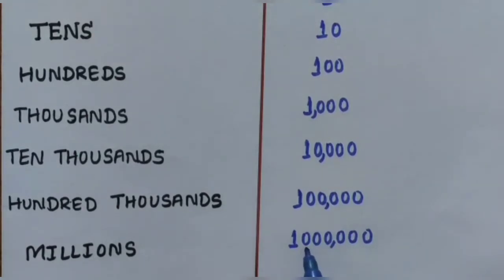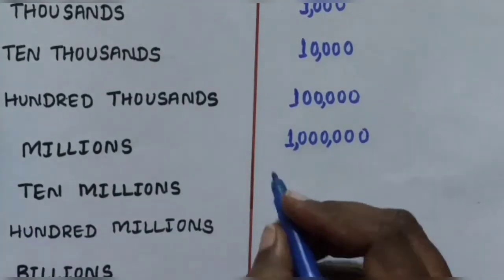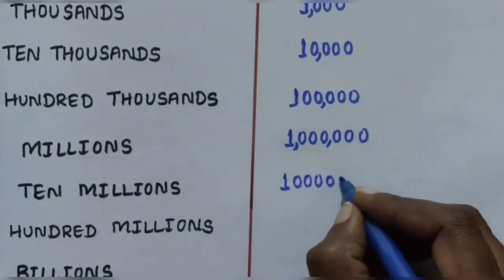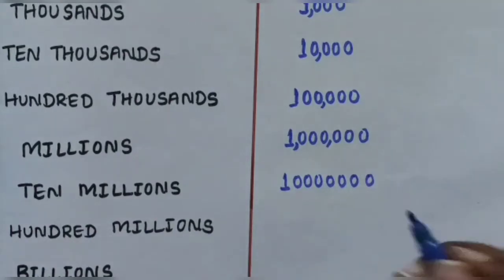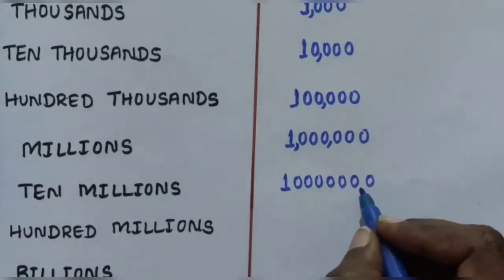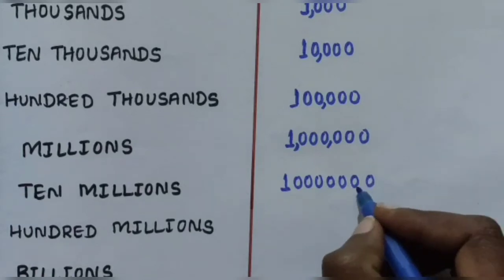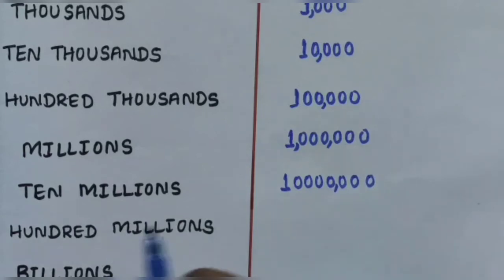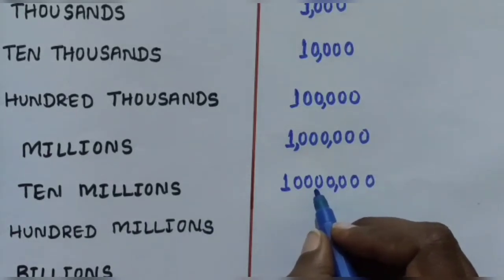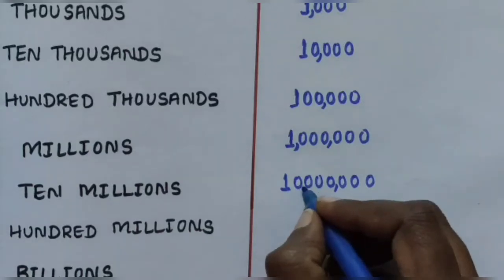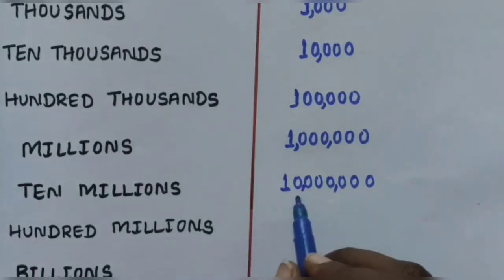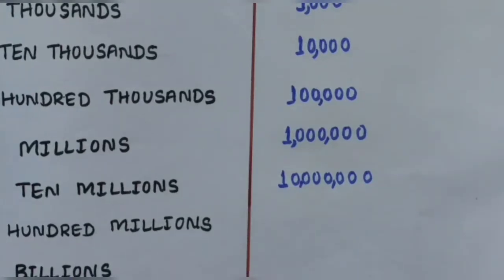So the place values are: Thousands, Ten Thousands, Hundred Thousands (first comma), then Millions. Next is Ten Millions, written as 10,000,000 - one followed by seven zeros. The first comma is applied after thousands, the second comma for millions. Place values: Thousands, Ten Thousands, Hundred Thousands, Millions, Ten Millions. Then Hundred Millions.